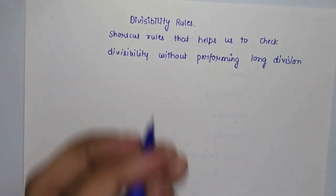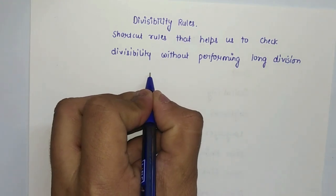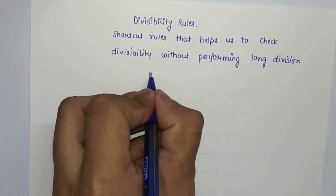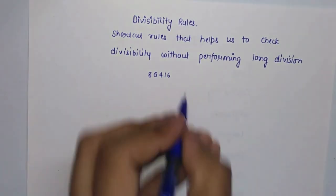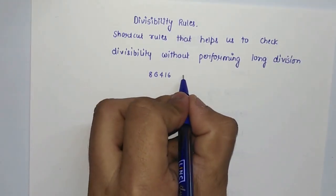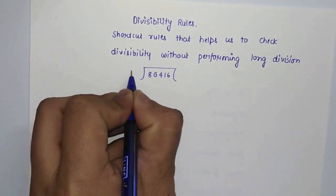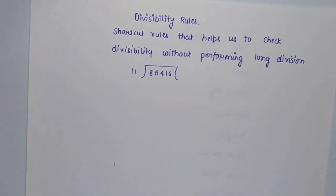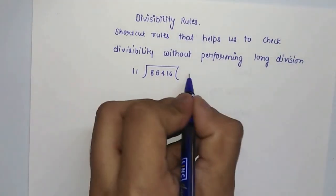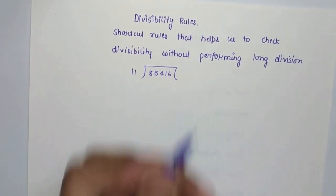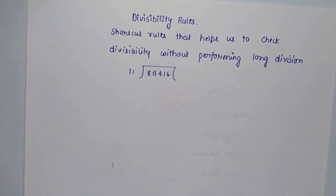For example, suppose you want to check whether 86,416 is divisible by 11. We don't need the actual quotient or remainder — we just need to check whether it divides or not. This is where the divisibility rule can help us a lot.